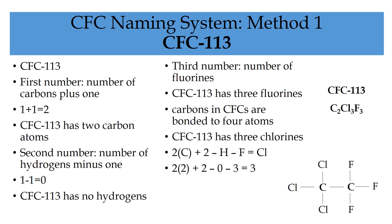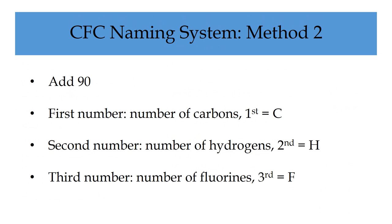However, this system is considered to be overly complicated, and another method exists where you add 90 to whatever the CFC number is. This will always produce a three-digit number: the first number will be the number of carbons, the second number will be the number of hydrogens, and the third number will be the number of fluorines. Then you can work out the chlorines from there.